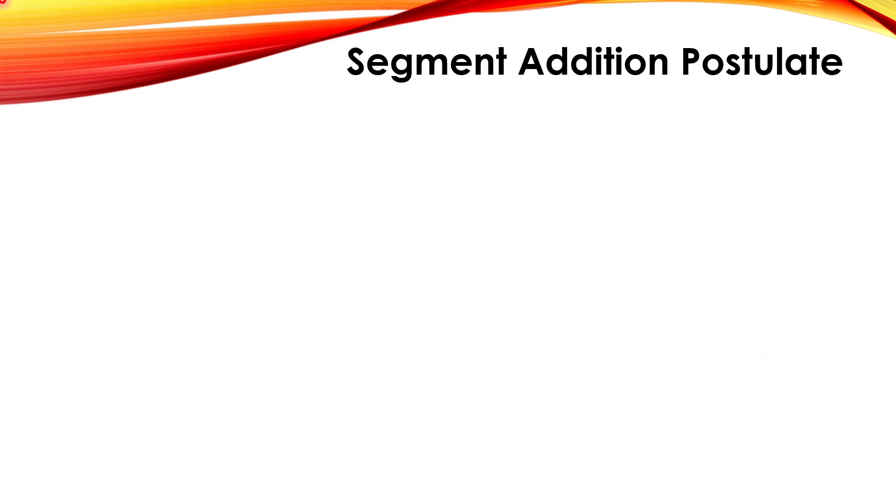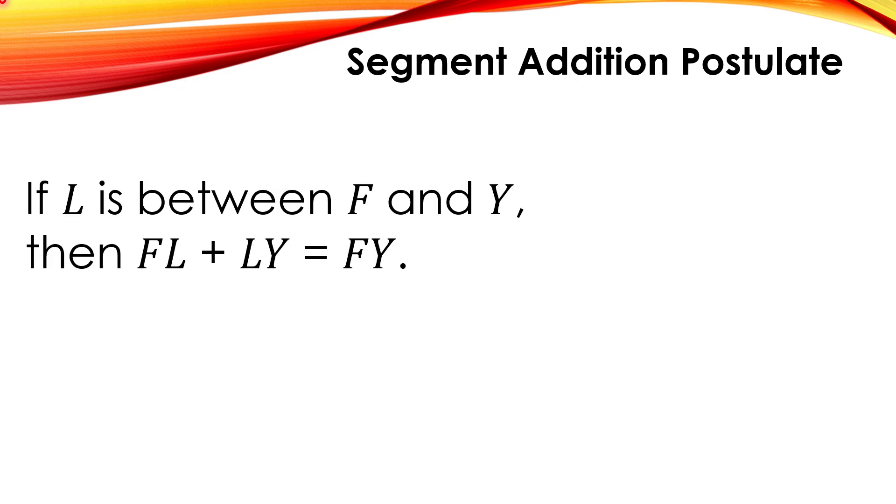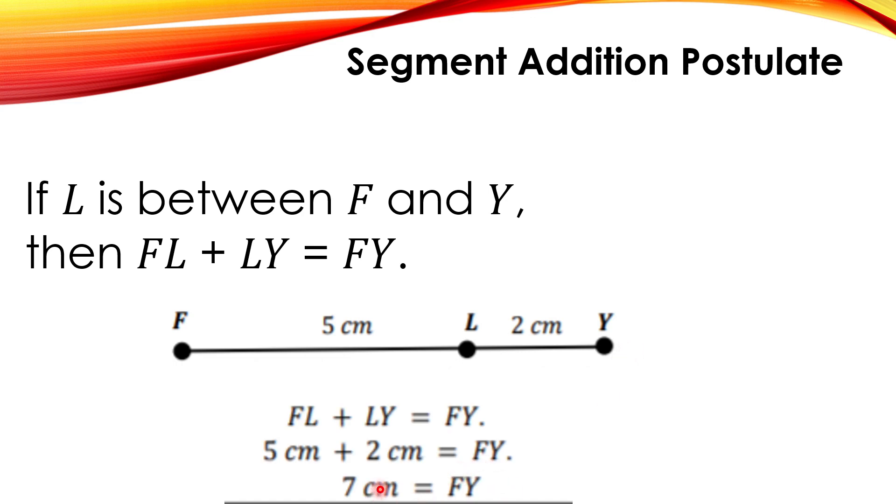Segment addition postulate. If L is between F and Y, then FL plus LY is equal to FY. So for example, we have here the line segment FY. Between the Y and F, that is point L. So here, FL is 5 cm and LY is 2 cm. We are going to add this 5 and 2. The total length of FY is 7 cm.